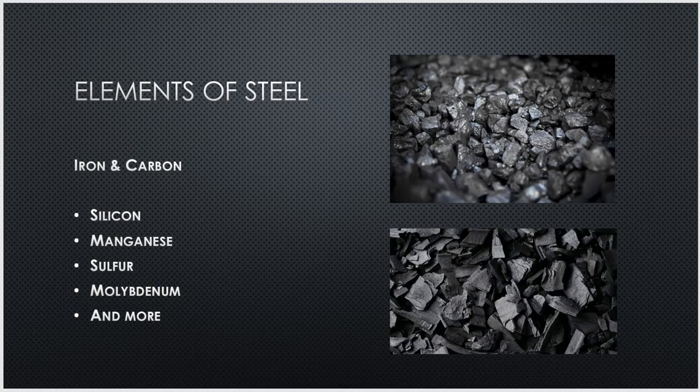Elements of steel — what exactly is steel made out of? There are a lot of different elements that come together to create the steel we work with in everyday industry jobs. But in its most basic form, steel is comprised of two elements: iron and carbon. There's going to be a lot of iron and just a tiny bit of carbon. A little bit goes a long way.